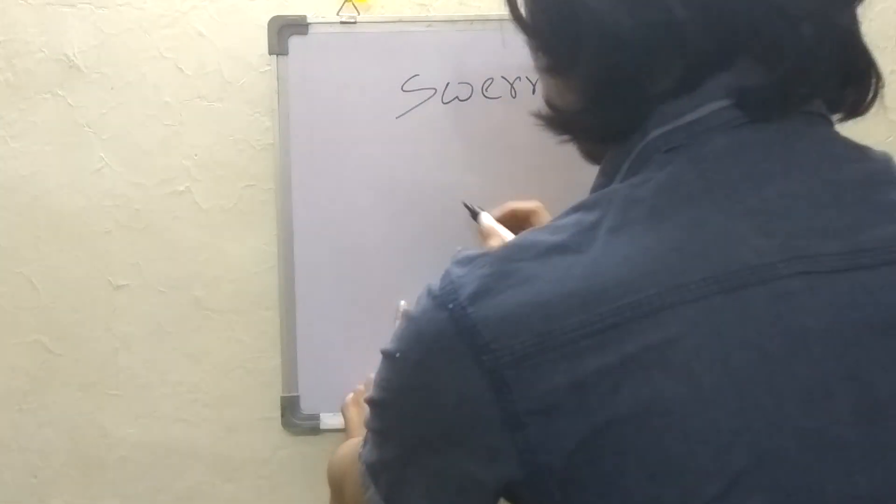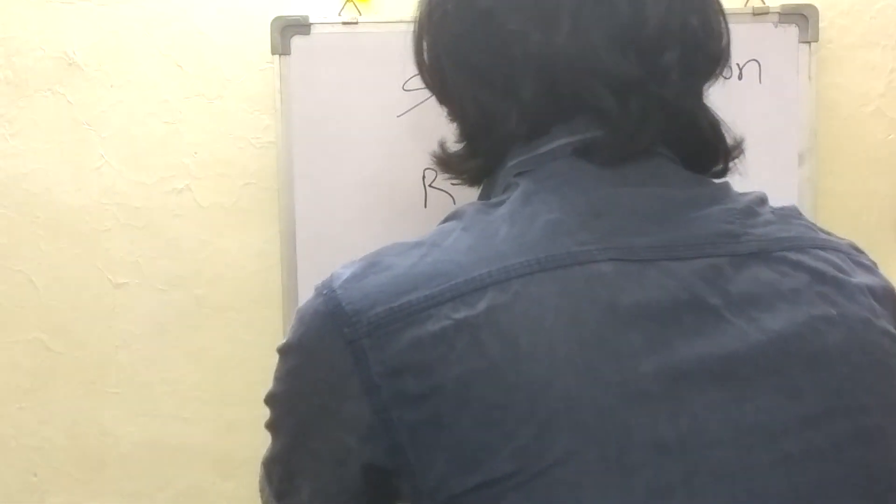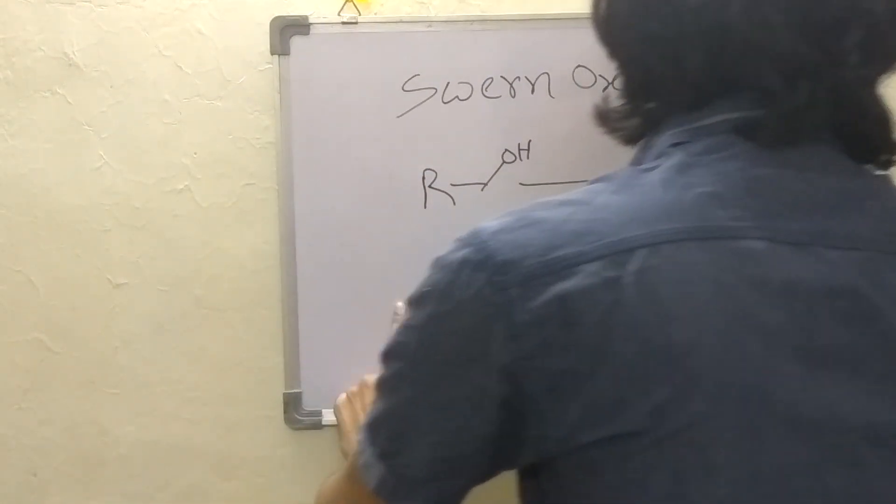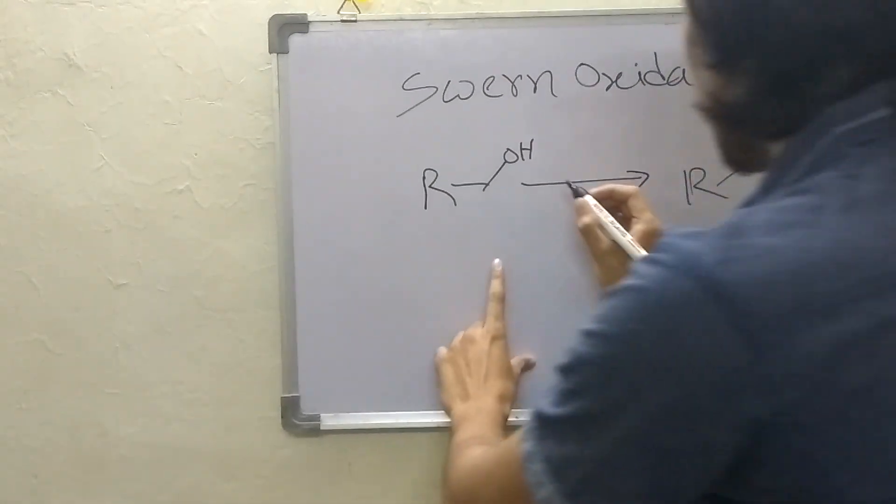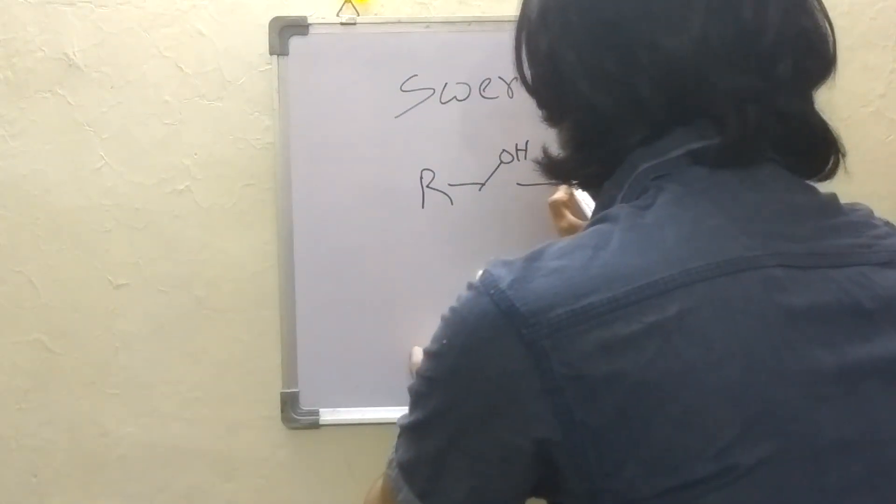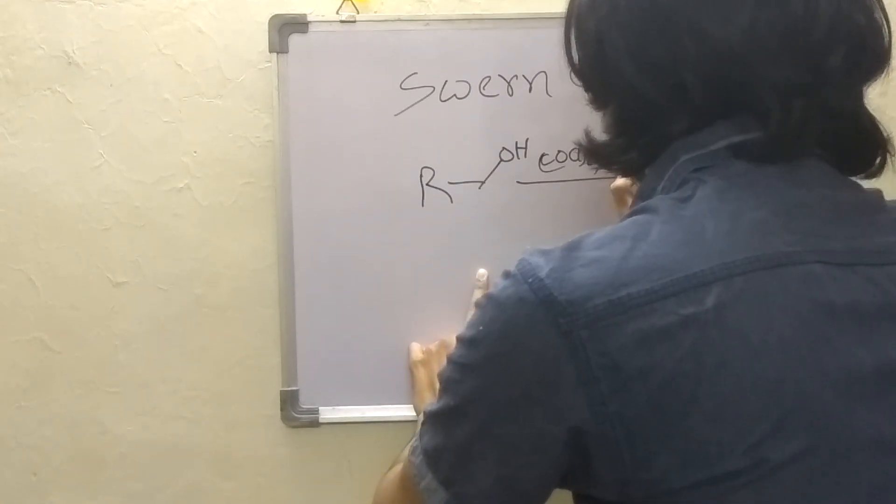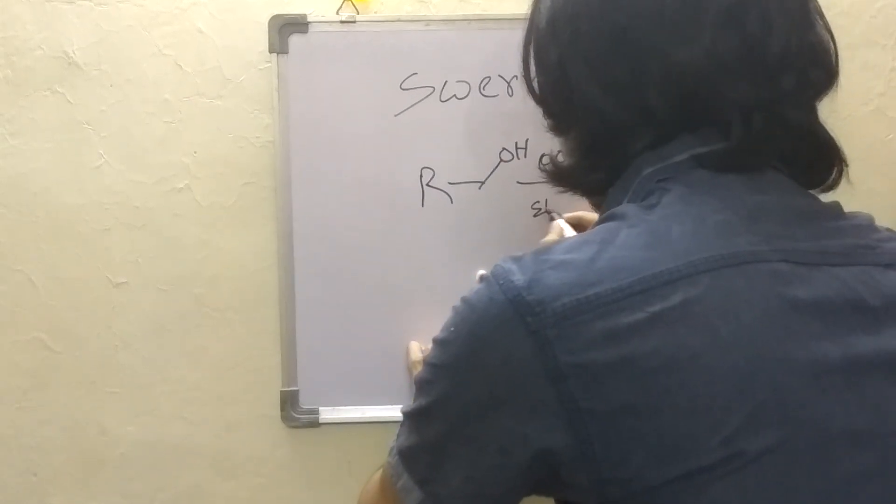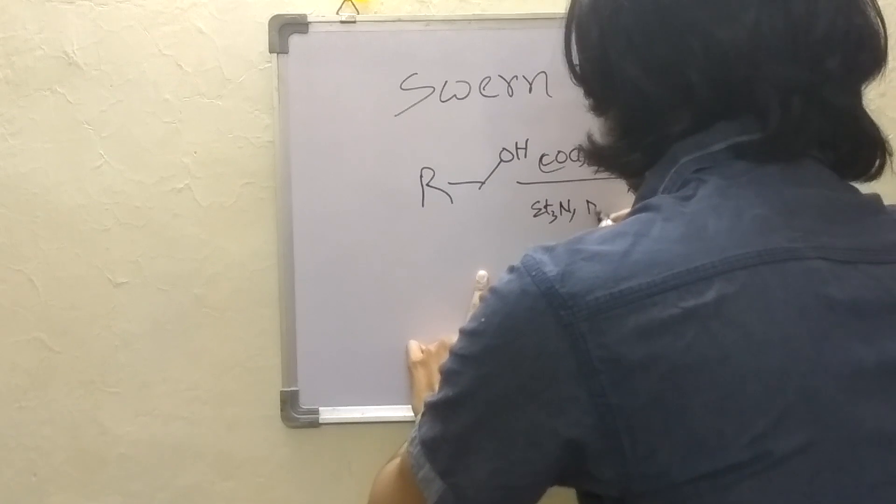Swern oxidation is basically a transformation of an alcohol to aldehyde or ketone. The reagents here are oxalyl chloride, DMSO, and triethylamine, and the solvent in this case is DCM.